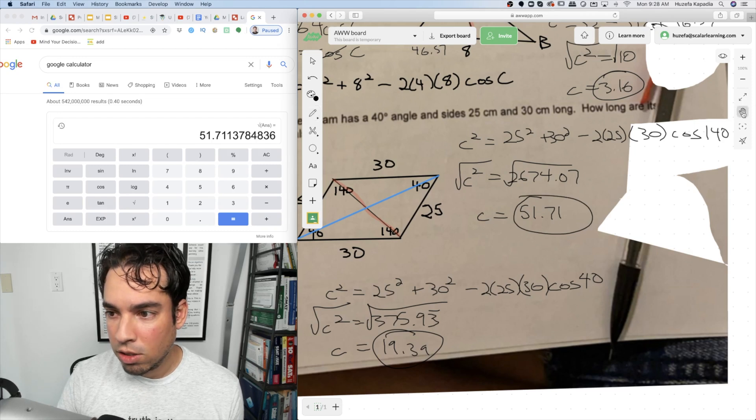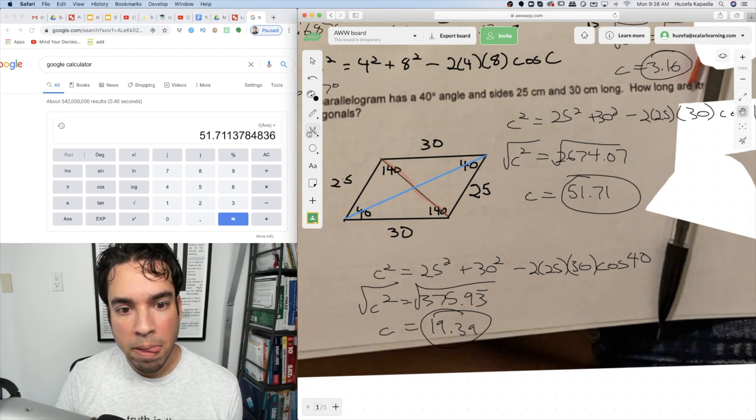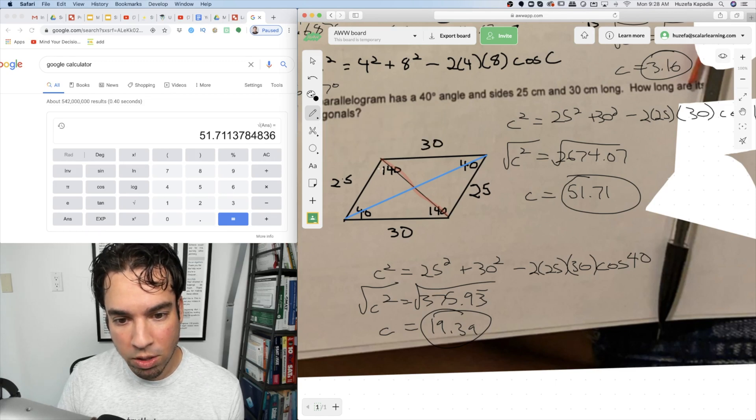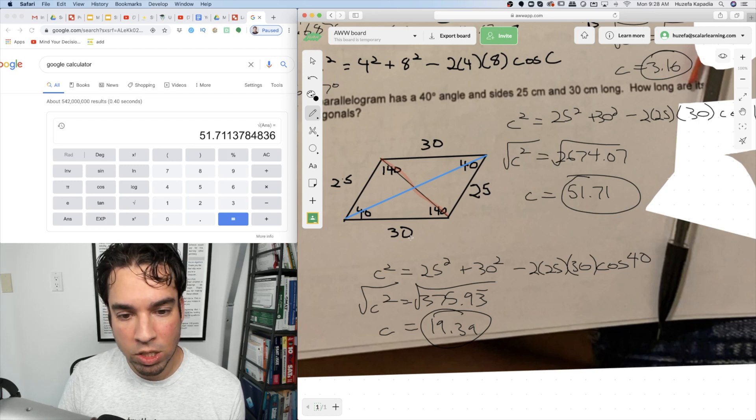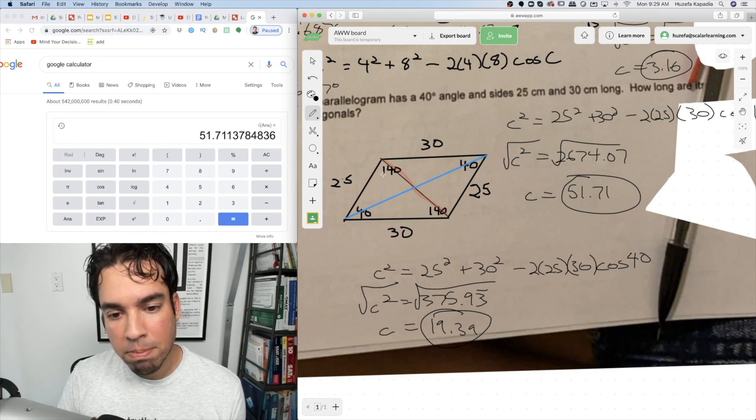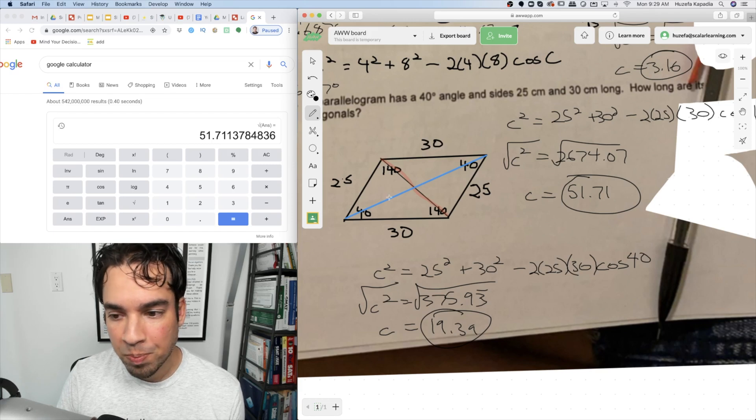Now you want to look at these answers and say, do they make sense, right? The 19 really does because it's opposite of 40. These guys are going to be bigger. These are bigger sides. They're going to be bigger angles. It makes sense, right? To be smaller than 25. Does this one make sense to be so gigantic of 51? I'd say it does because it's opposite a massive angle of 140. You know, maybe it's not drawn exactly to scale, but I'd say 51. It makes sense to me. And that's it.